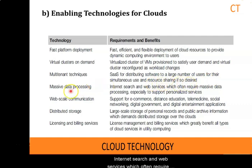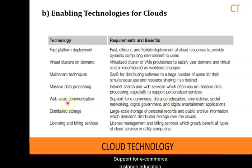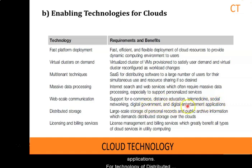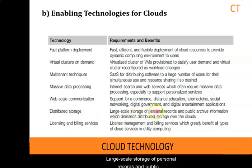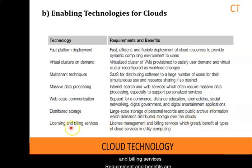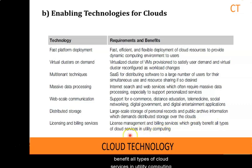For the technology of massive data processing, the requirement and benefits are internet search and web services which often require massive data processing, especially to support personalized services. For the technology of web-scale communication, the requirement and benefits are support for e-commerce, distance education, digital medicine, social networking, digital government, and digital entertainment applications. For the technology of distributed storage, the requirement and benefits are large-scale storage of personal records and public archive information which demands distributed storage over clouds. For the technology of licensing and billing services, the recommended benefits are license management and billing services which greatly benefit all types of cloud services in utility computing.